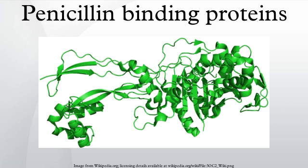PBPs bind to beta-lactam antibiotics because they are similar in chemical structure to the modular pieces that form the peptidoglycan. When they bind to penicillin, the beta-lactam amide bond is ruptured to form a covalent bond with the catalytic serine residue at the PBP's active site. This is an irreversible reaction and inactivates the enzyme.